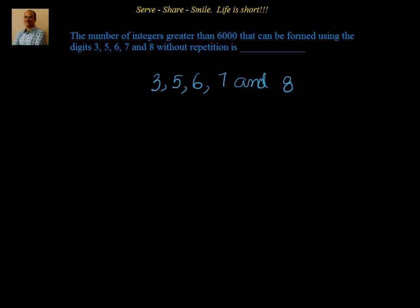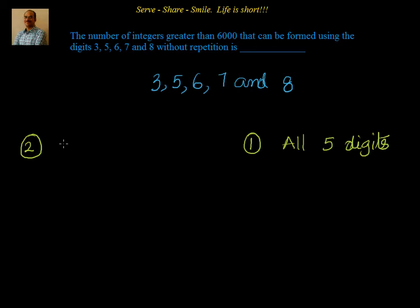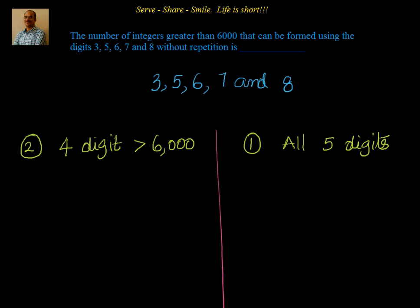We have been given five digits and we have to find all integers greater than 6000. Since 6000 is a four-digit number, the solution comes from two scenarios: the first scenario is all five-digit integers using 3, 5, 6, 7, and 8, and the second part comes from all four-digit integers which are greater than 6000. We will find both and add them.